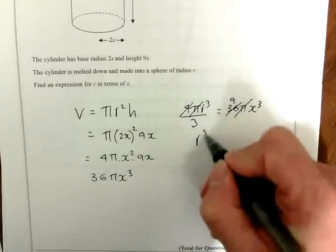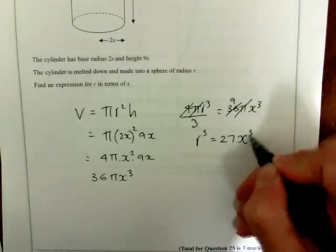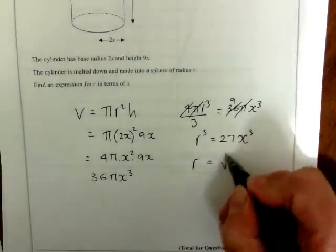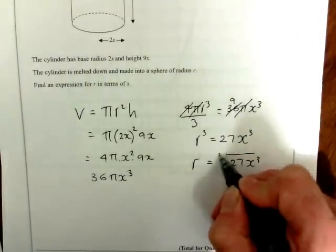Taking the 3 across gives r³ = 27x³. To find r, r equals the cube root of 27x³.